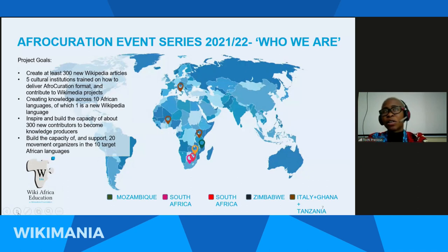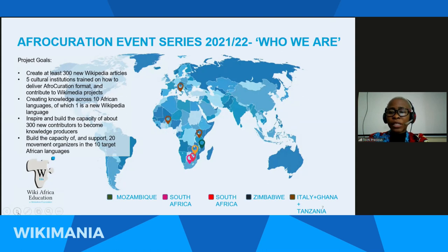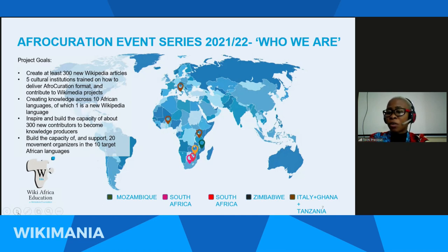We had events across Mozambique, two events in South Africa, and an event in Zimbabwe. We also had one event combining three partners: the Politecnico di Milano in Italy, the Tui community user group from Ghana, and Wikimedia Tanzania.